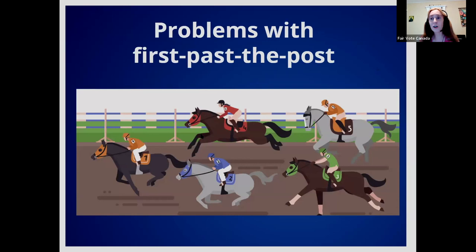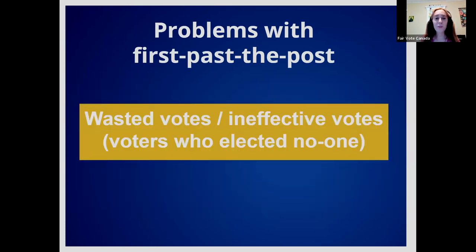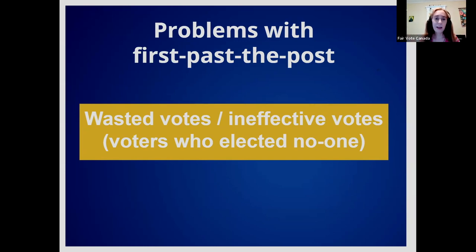The first and biggest problem with first-past-the-post is wasted or ineffective votes — voters who cast a ballot that did absolutely nothing, elected nobody, and made no difference to the makeup of parliament. This is the foundation problem for all the other problems that come from first-past-the-post: the fact that most of our votes don't actually do anything.